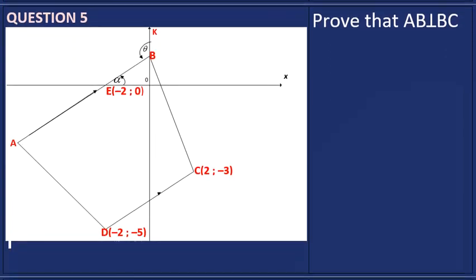In question five we have to prove that AB is perpendicular to BC. Lines are perpendicular if the gradient of AB multiplied by the gradient of BC equals negative one. We already know the gradient of AB is a half, so now we need to work out the gradient of BC.